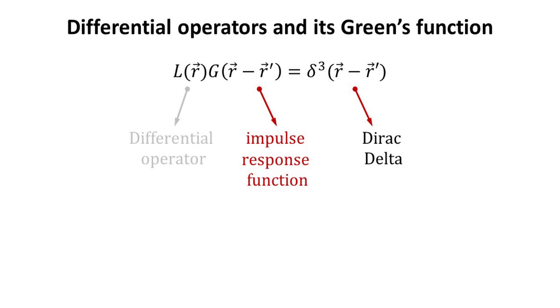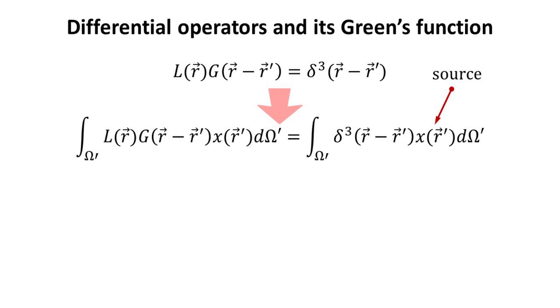The Green's function is also called the impulse response function of the differential operator L. Let's now consider an arbitrary source term given by the function X and convoluted with the Dirac-Delta function over all space in the coordinate R-prime.